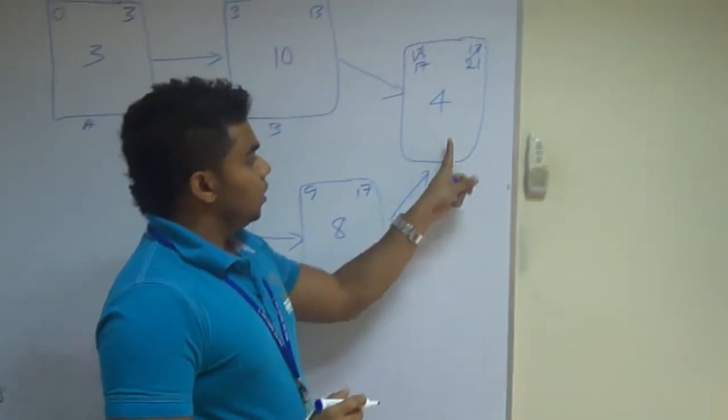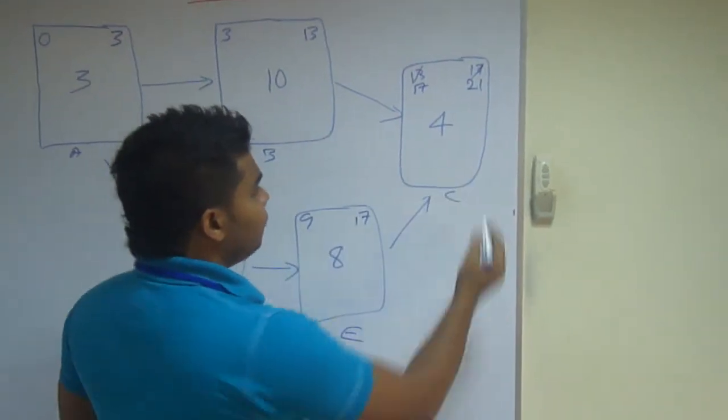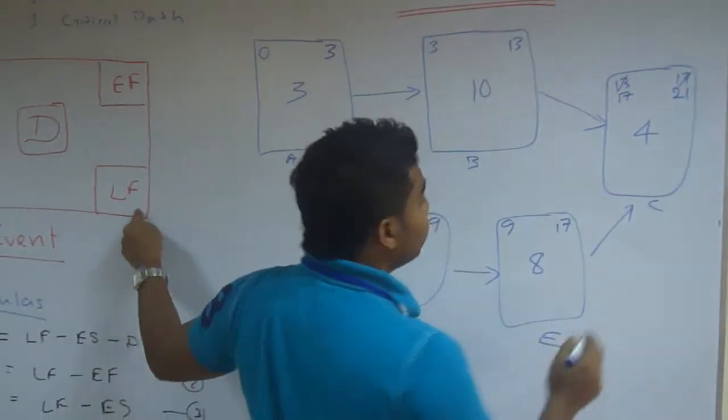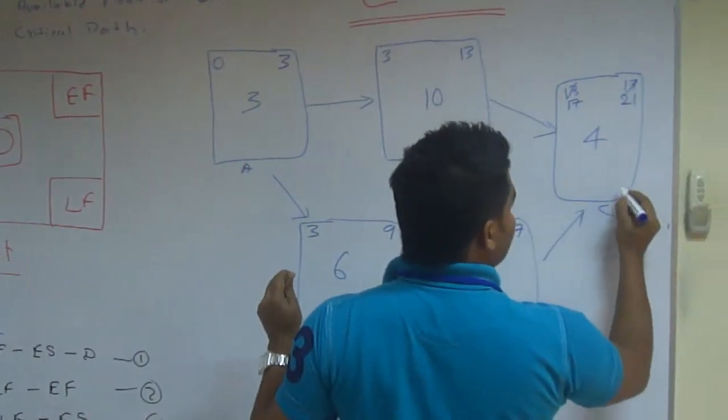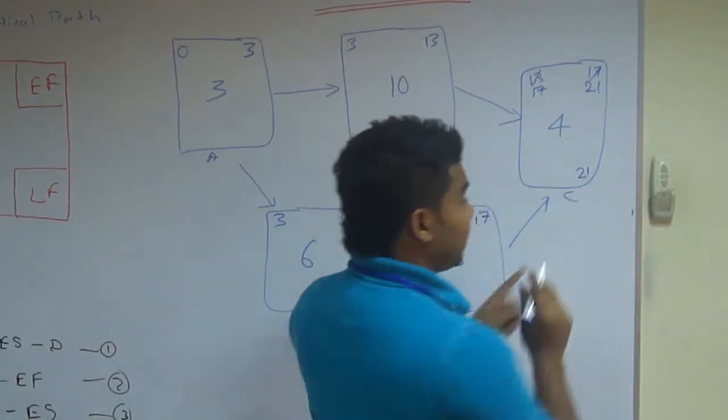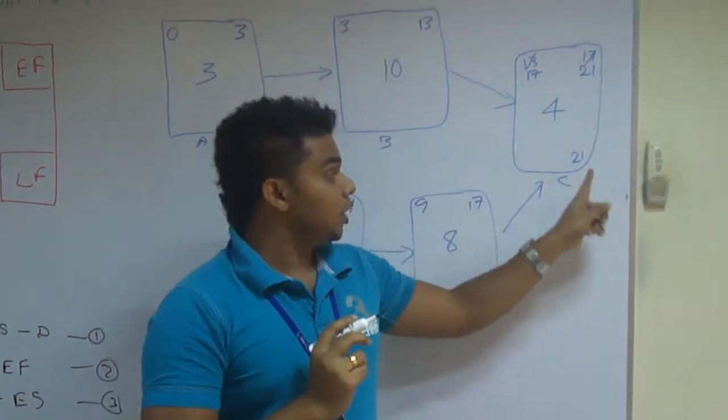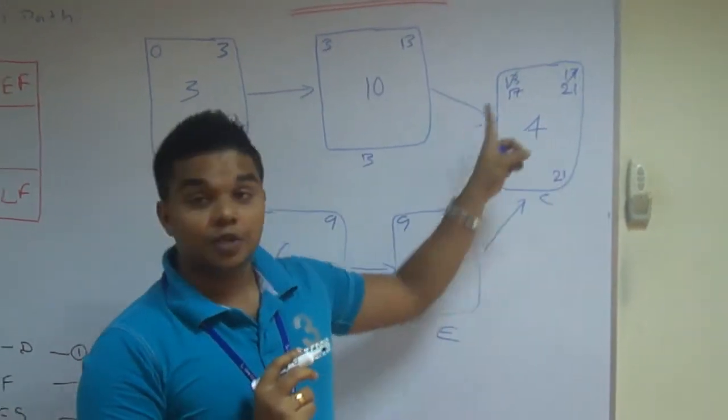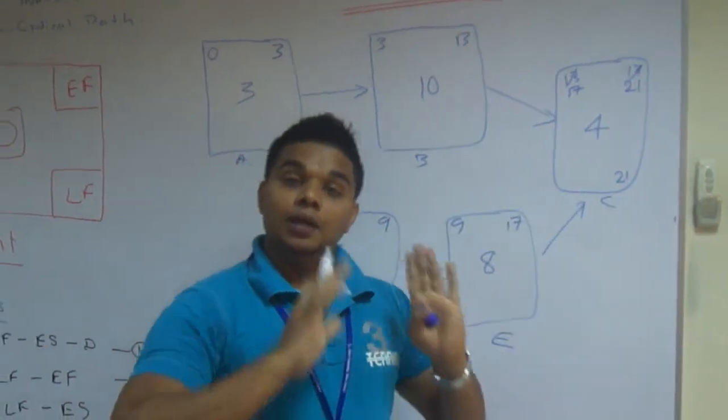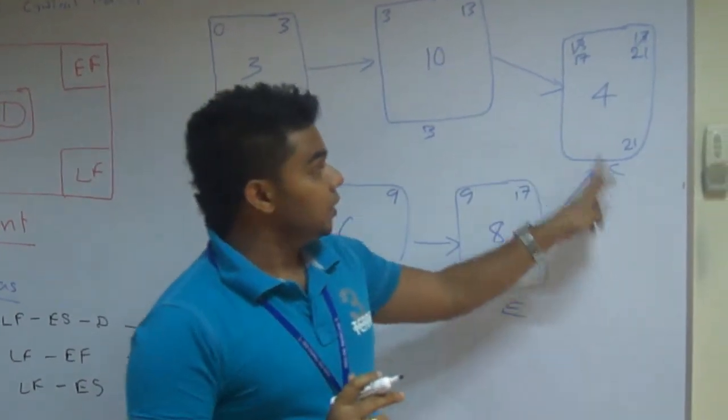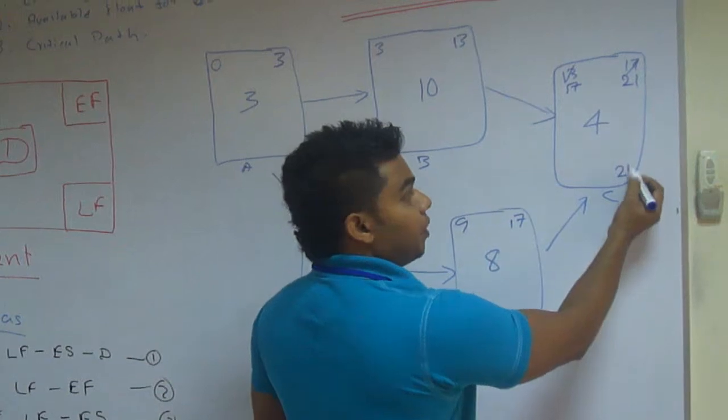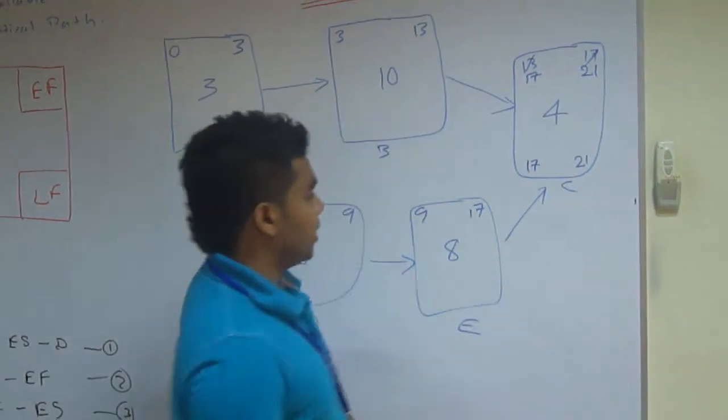Here, now, we will fill these boxes. LS and LF. Same as here. Because we are expected to finish the project at twenty-first. So that means at least we should start. That is the latest time we can start event C is twenty-one minus four. That is seventeen.